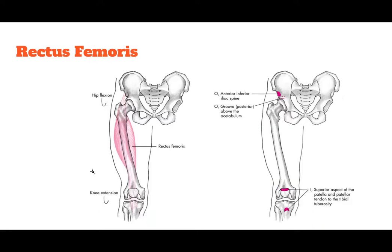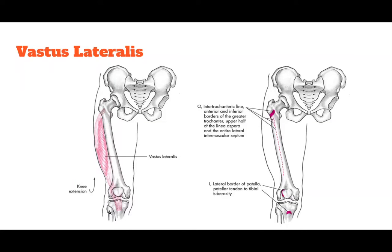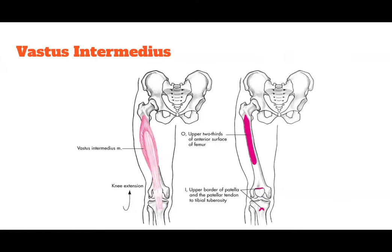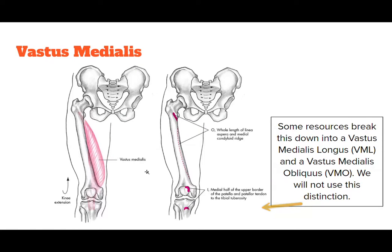The rectus femoris goes from the AIIS down into the tibial tuberosity. They all have femoral nerve innervation. We have the vastus lateralis on the lateral side, coming off the linea aspera on the posterior side of the femur. We have the intermedius, which is deep to the rectus femoris, going into the tibial tuberosity. And then we have the vastus medialis. Some resources may break this down into the vastus medialis longus and vastus medialis obliquus, but we're still going to call it quadriceps rather than a muscle group with five muscle bellies.